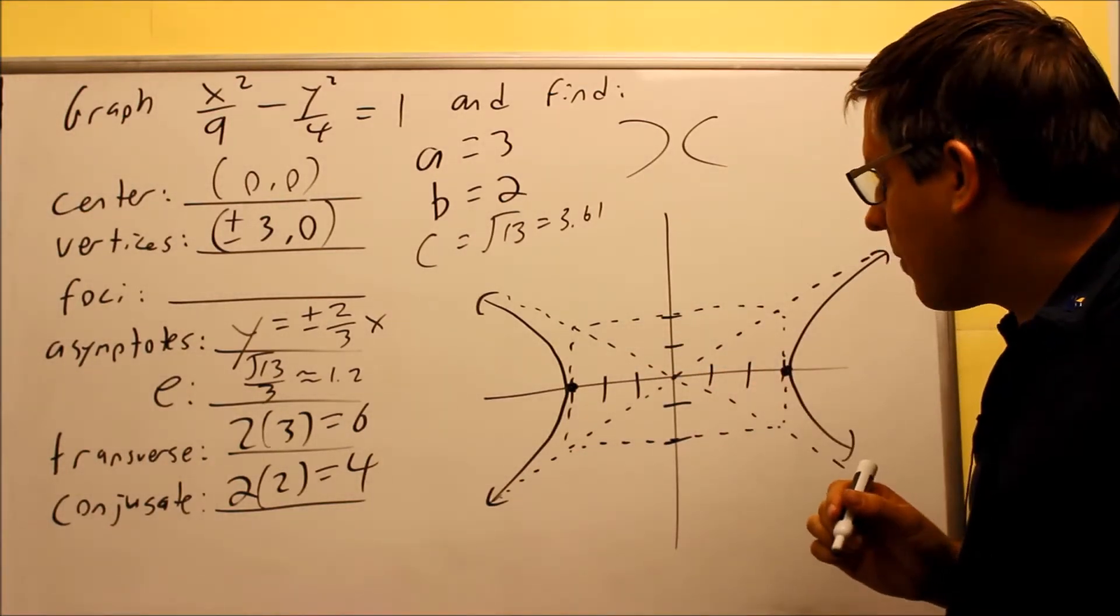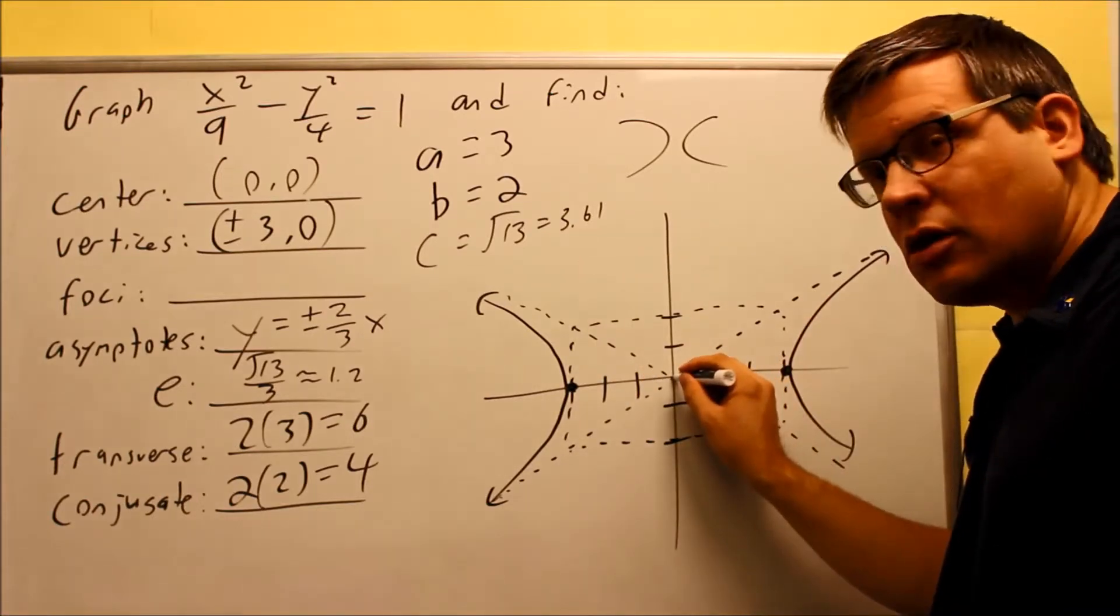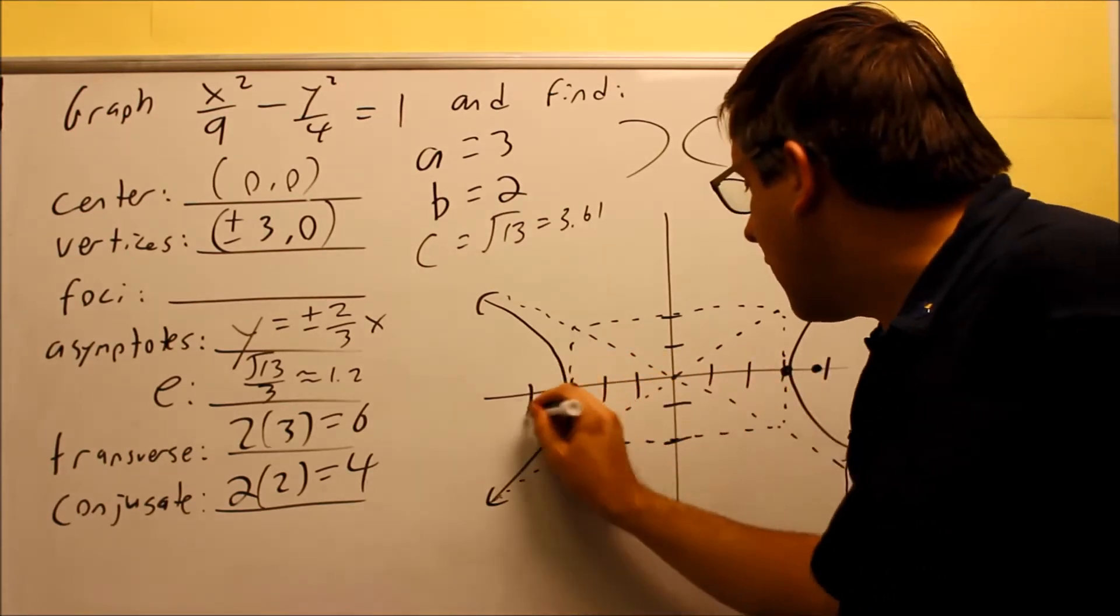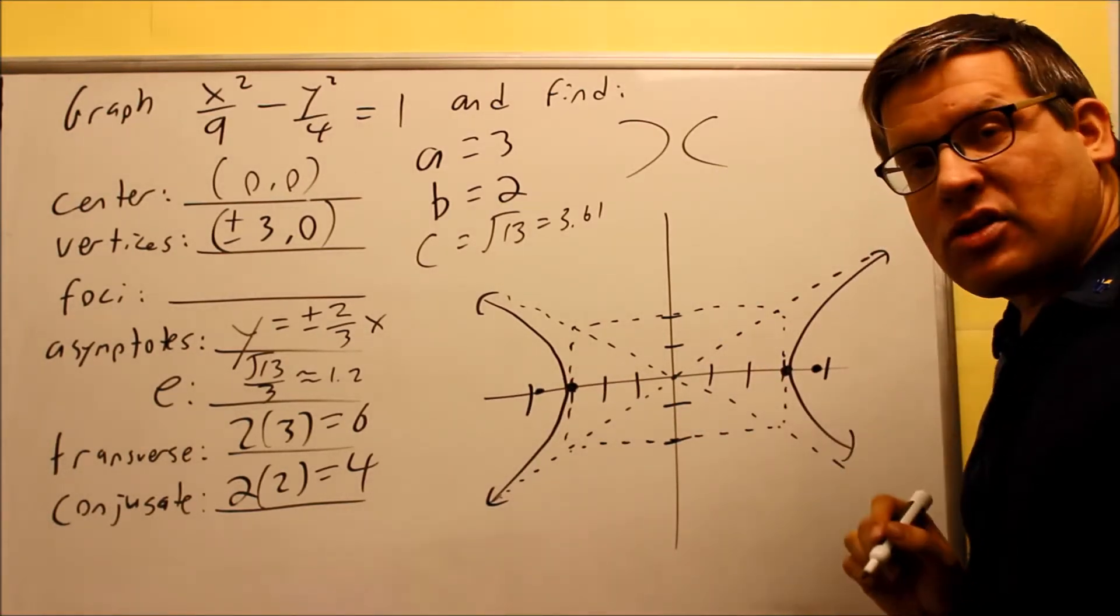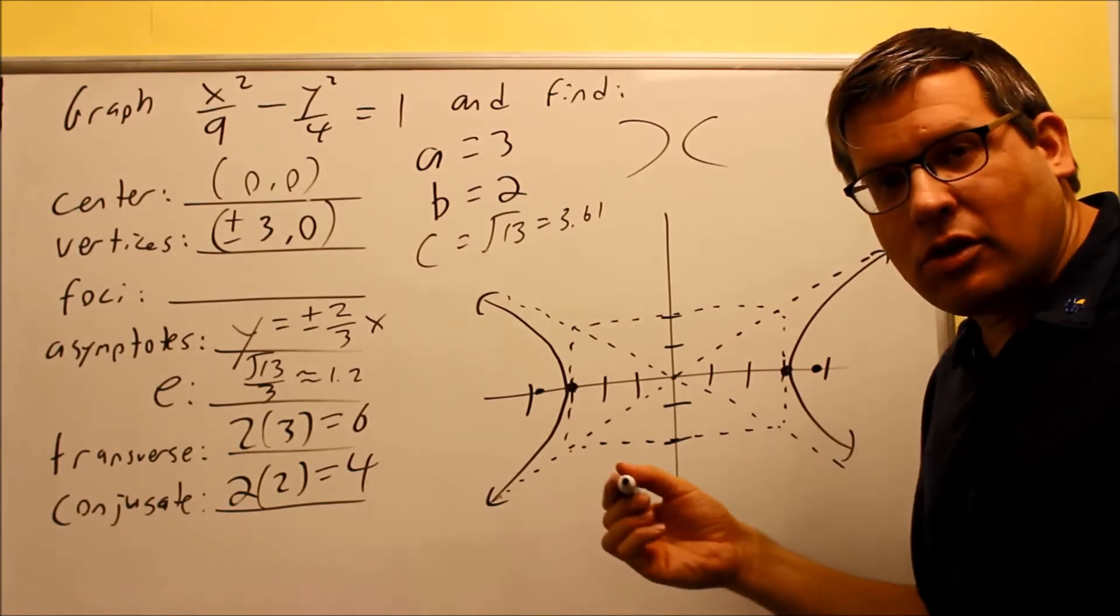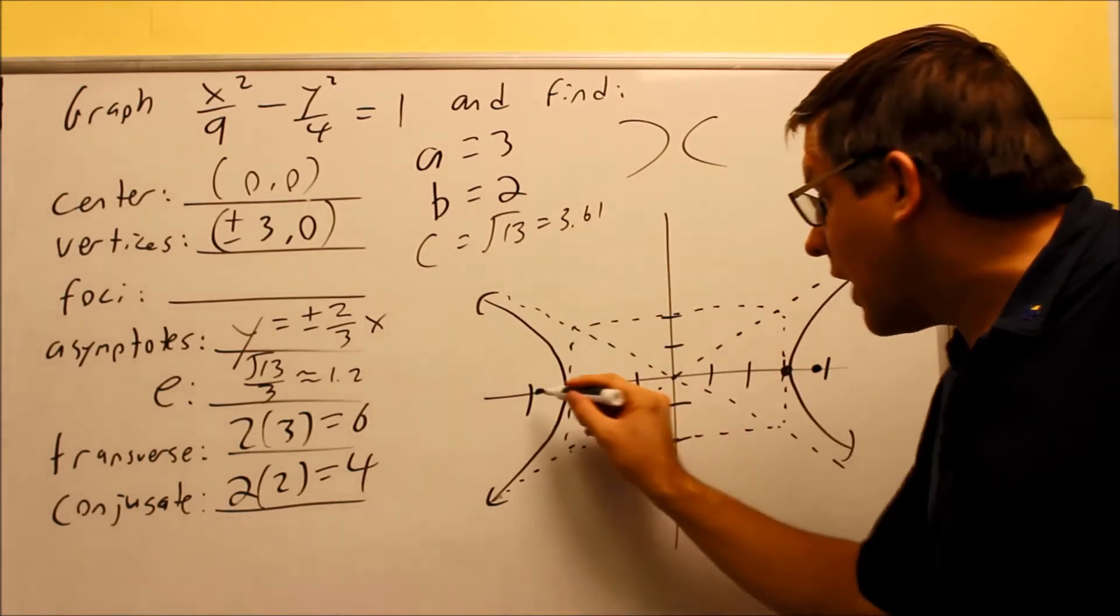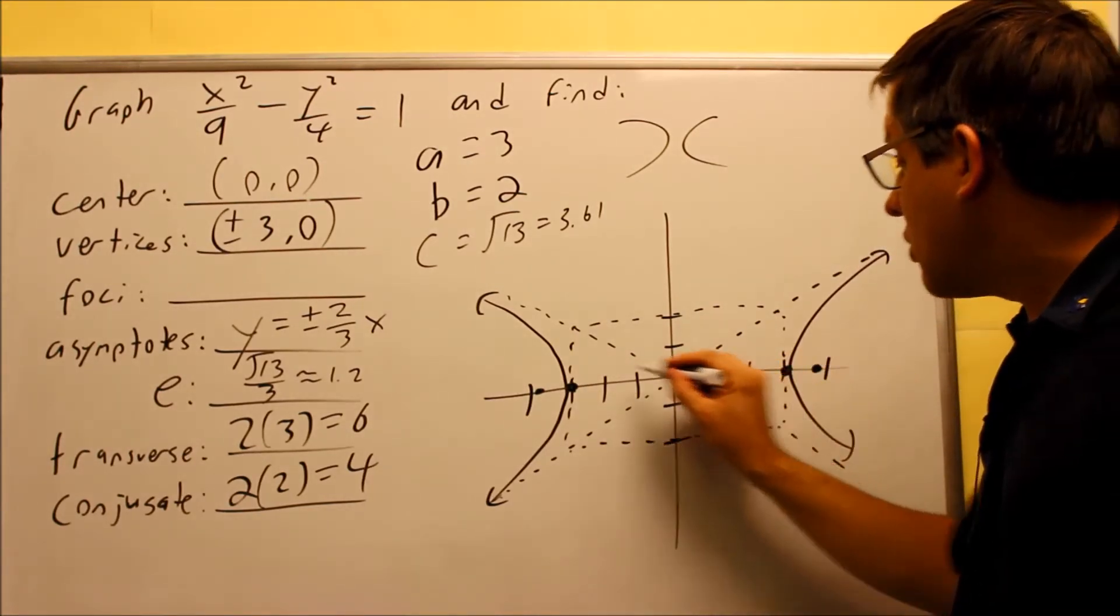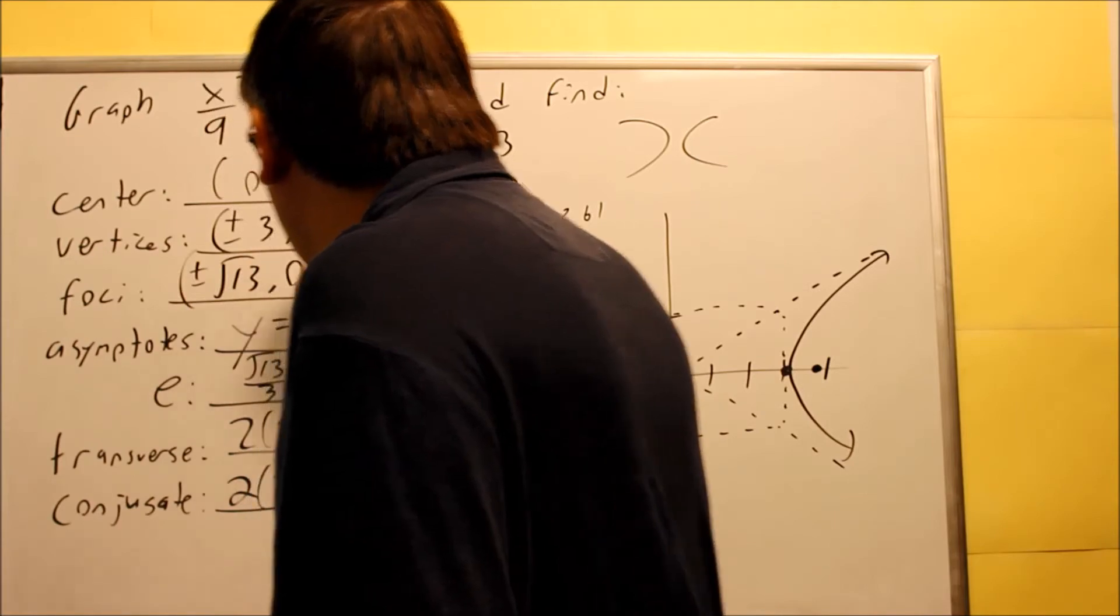The last thing we have to worry about is the c value. C is 3.61, so from the center if I go 3.6 it's going to put that foci outside the box and you have it outside the box over here. Whenever you do these, you should always end up something outside of the box because the foci has to be inside the curve. When we talked about the parabola section, the foci is always inside of that particular curve. You've got to have those inside there. What did I do? I basically added square root of 13 and I subtracted square root of 13, so this is going to be plus or minus square root of 13 comma 0 would be the coordinates of that.